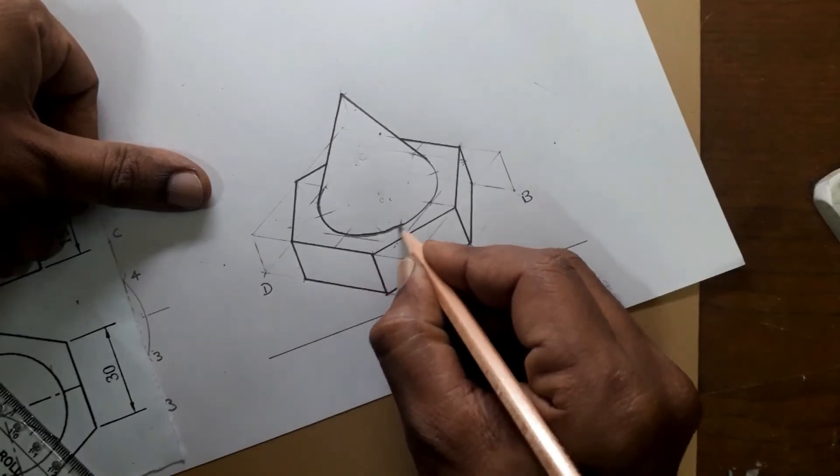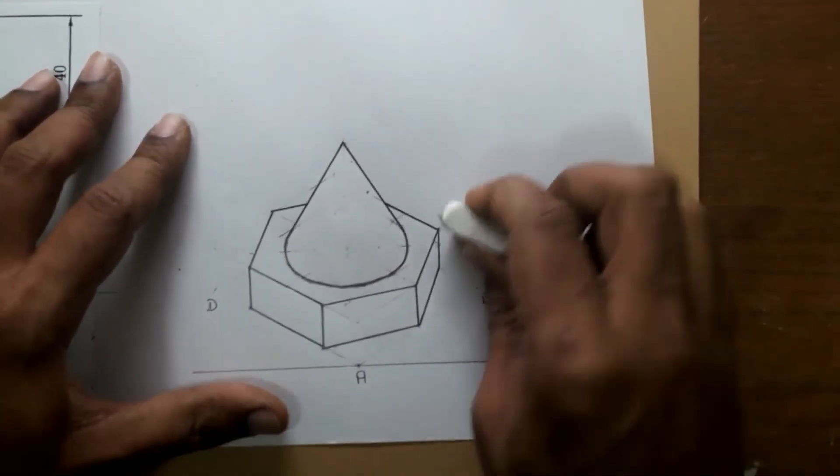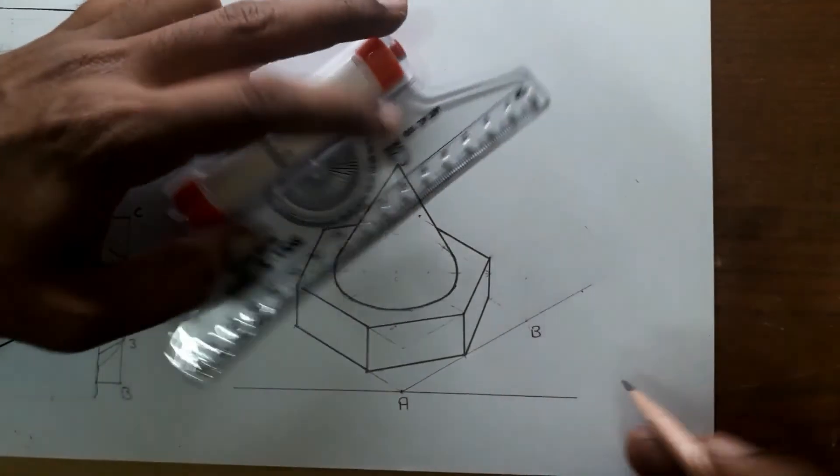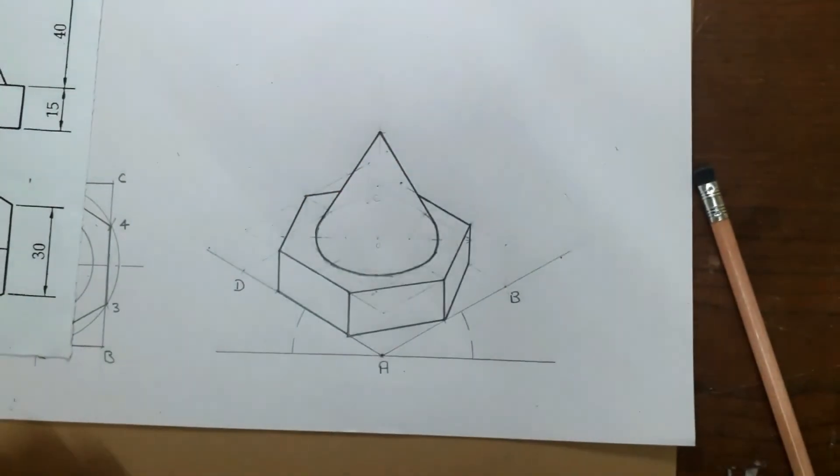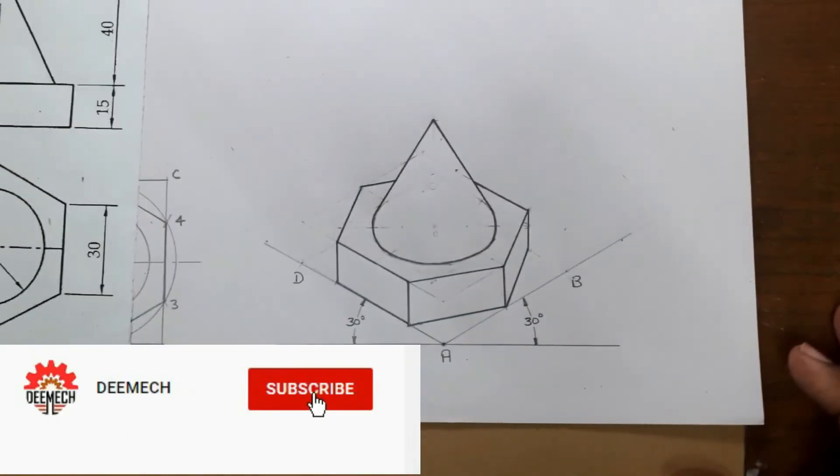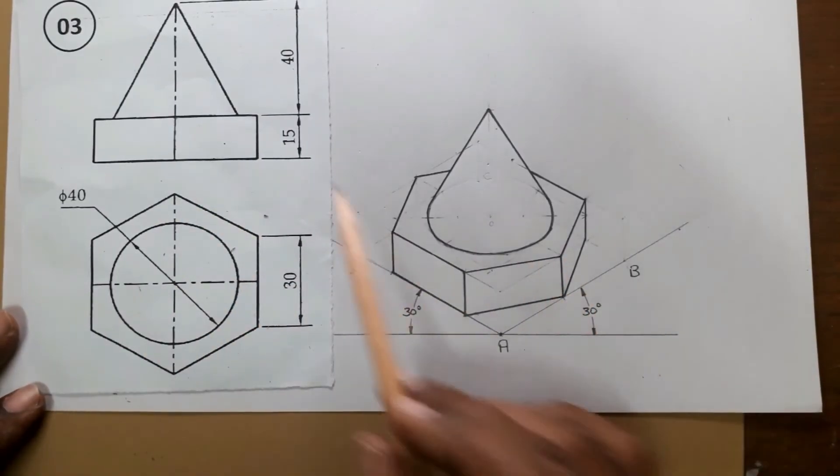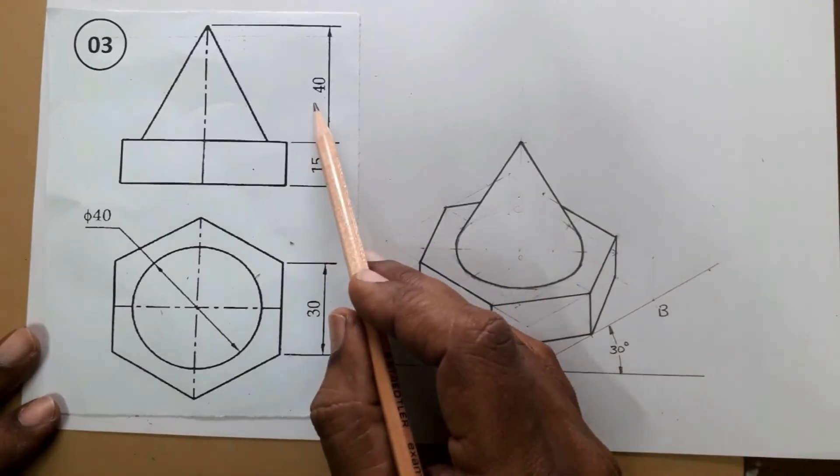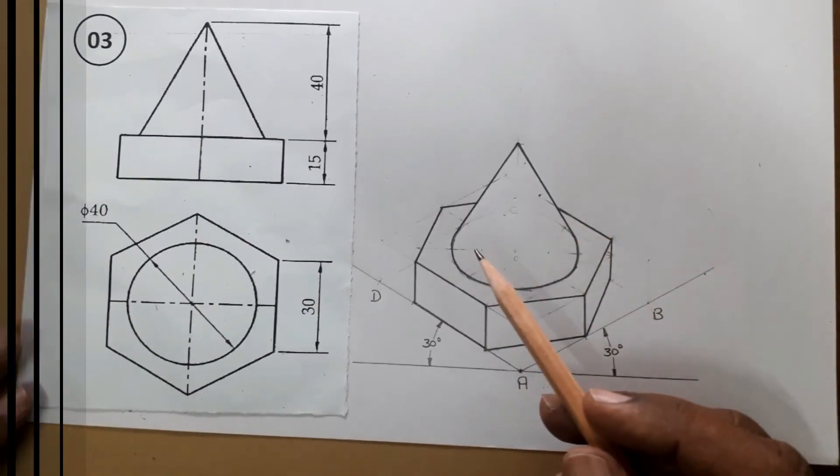The base lines are at 30 degrees. Use unidirectional arrows with 30 degree arrowheads on both sides. This is the required solution: orthographic to isometric view. The base is a hexagonal prism of height 15 mm. On top, the cone is of height 40 mm and diameter 40 mm. So this is the isometric view of this section.